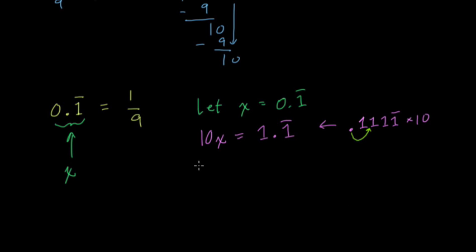Well, we can think about what 10x minus x would equal in terms of algebra and also in terms of the number values. So here, 10x equals 1.1 repeating, and x equals 0.1 repeating. So all I did on the left-hand side was write 10x minus x, and on the right-hand side I wrote that with numbers.